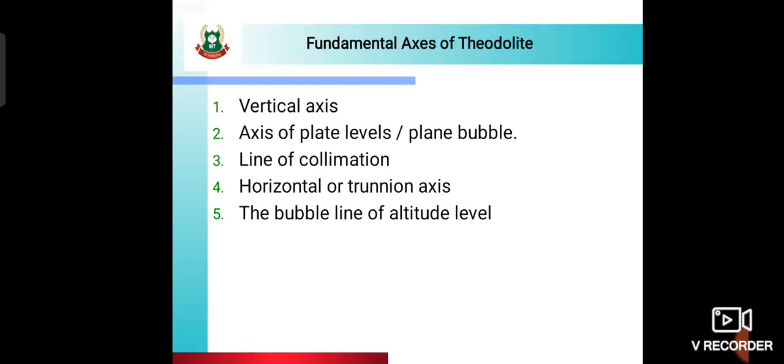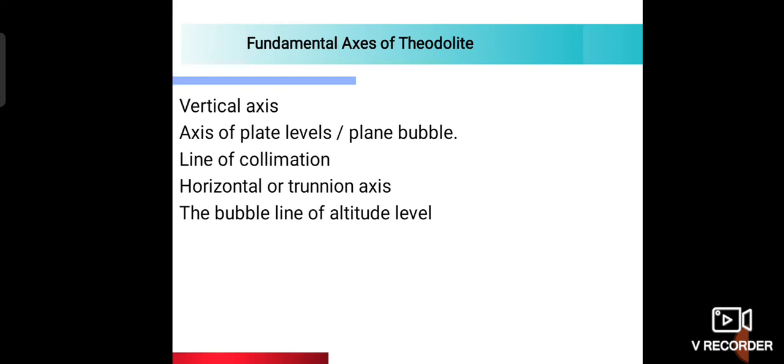Now, the fundamental axes of theodolite. There are five fundamental axes: vertical axis, axis of plate levels, altitude bubble (oblique plane bubble), line of collimation, horizontal or trunnion axis, and the bubble line of the altitude level. These are your five fundamental axes.